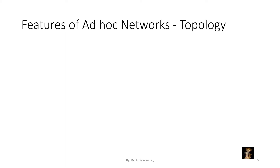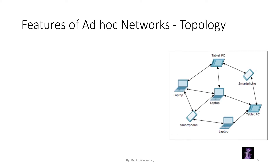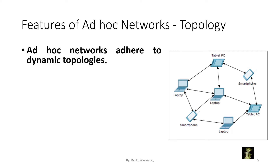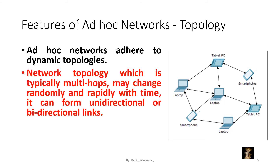The first feature we are going to discuss is topology. Ad hoc networks adhere to dynamic topologies. The network topology, which is typically multi-hop, may change randomly and rapidly with time. It can form unidirectional or bidirectional links.